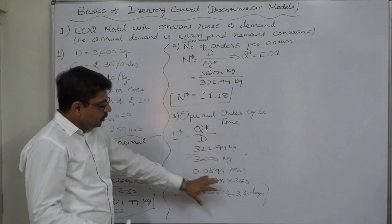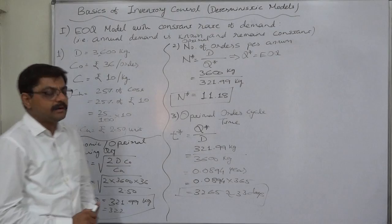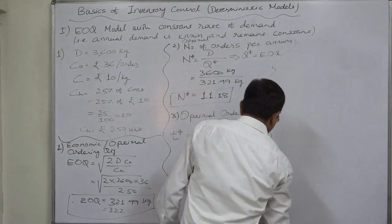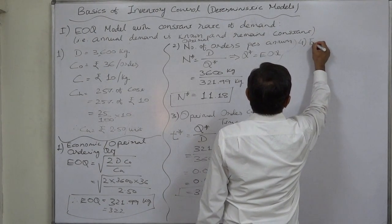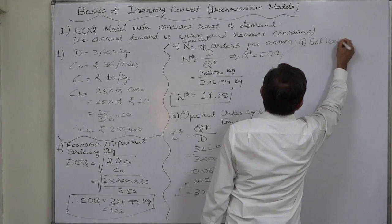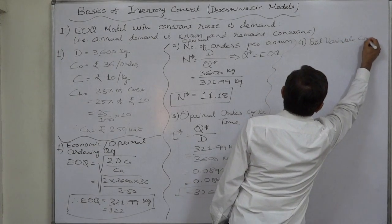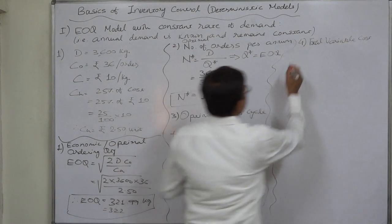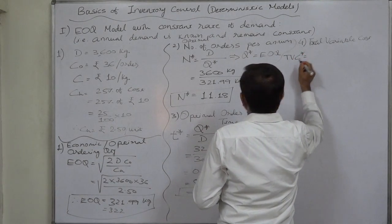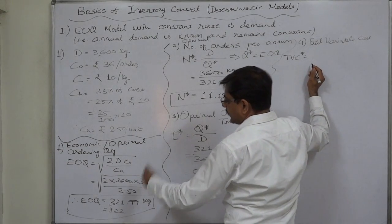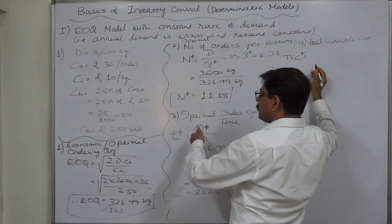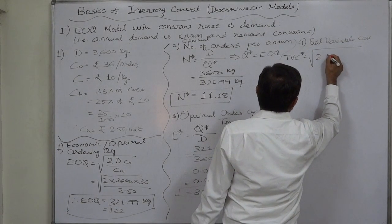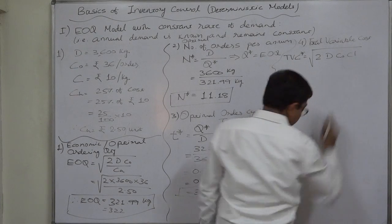Number 4 is total variable cost, popularly known as TVC star. TVC star. If we follow the EOQ model, that means, if our ordering quantity Q star is EOQ itself, then we can use this formula. 2 into D into CO into CH.